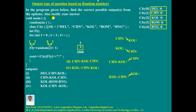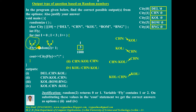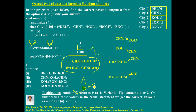The second part of the question is to justify your answer. For writing the correct answer you get 1 mark, and for justification another 1 mark. The justification can be written like this: random(2) returns 0 or 1, so variable fly contains either 1 or 2. On substituting these values in the cout statement, we get the correct answer. So this is the correct answer and this is the justification — 1 mark each.